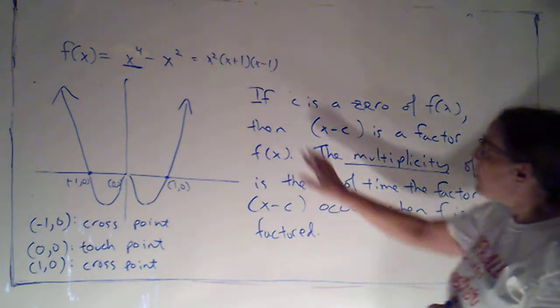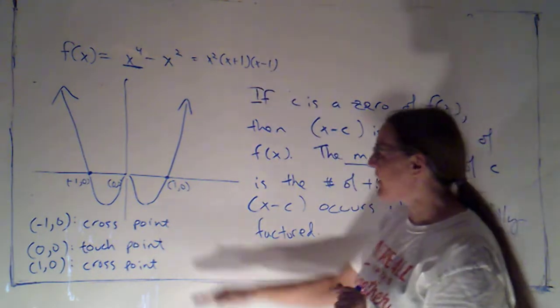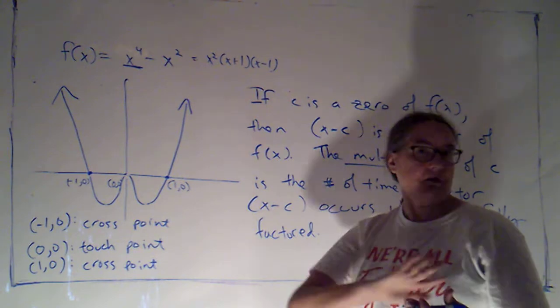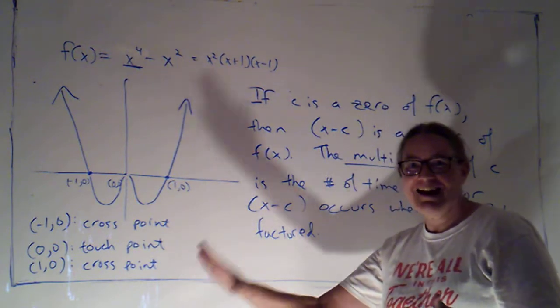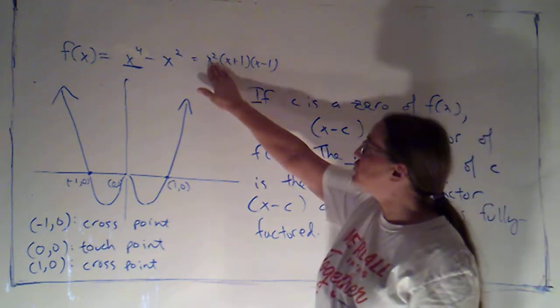And notice, when the multiplicity was 1, which is an odd number, we were at a cross point. Because when that factor changed sign, none of the other factors changed sign there, and that made the whole polynomial change sign.